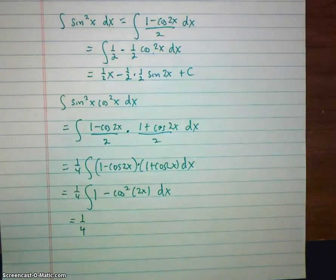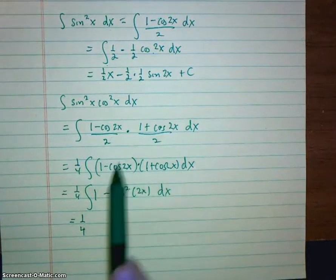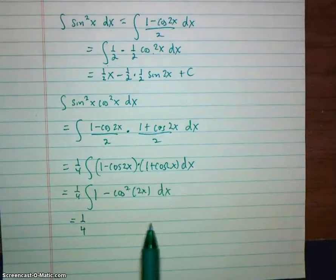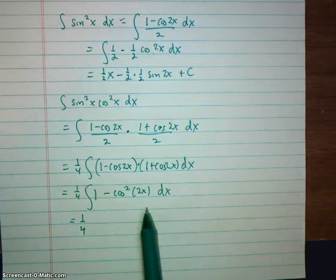And this is going to happen very often in these problems. You'll do the power reduction formulas. Then you'll have to multiply some stuff together like we did here. And then you'll have to do the power reduction formula again.